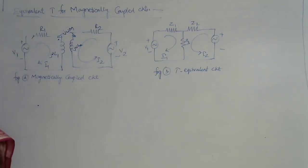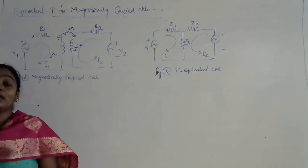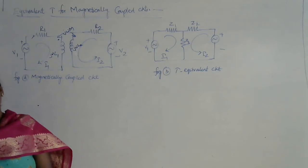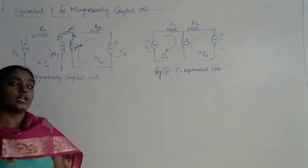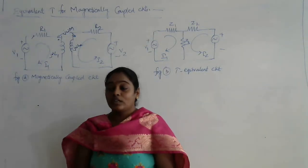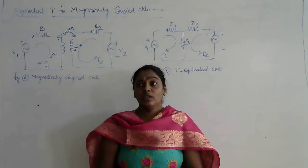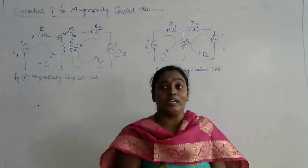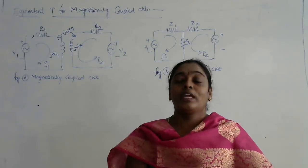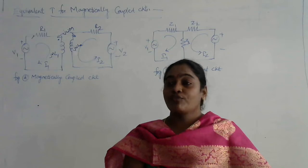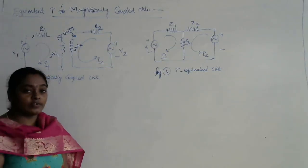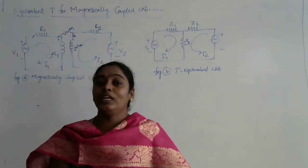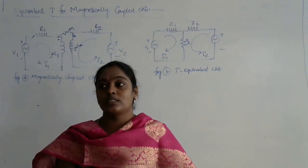The next topic is the equivalent T for magnetically coupled circuits. Whenever we deal with magnetically coupled circuits, it consists of self inductance as well as mutual inductance. When we cannot correctly write the expressions for mutual inductances depending upon entering and leaving current using dot convention, we cannot find the correct loop currents. So here, in the case of equivalent T circuits, we convert the complete magnetically coupled circuit into an equivalent T circuit without using the concept of dot convention.